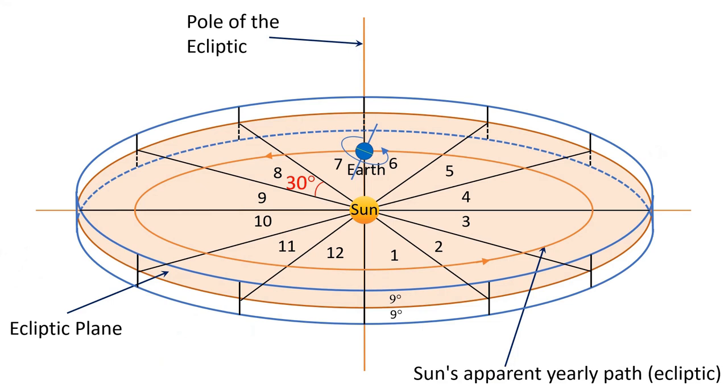The first zodiac sign starts at 0 degrees and finishes at 30 degrees. The second sign starts at 30 degrees and finishes at 60 degrees. The third one starts at 60 degrees and finishes at 90 degrees and so on.